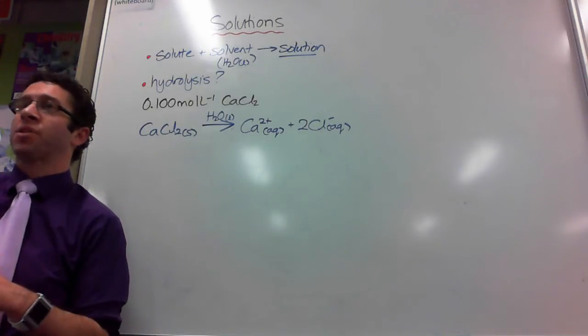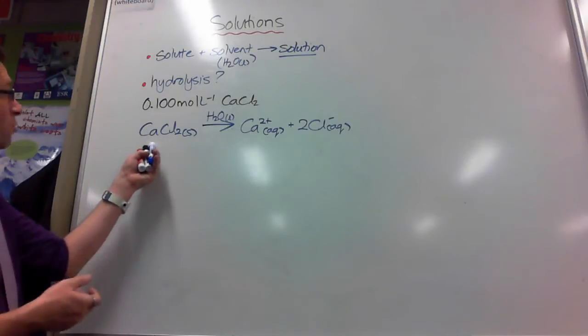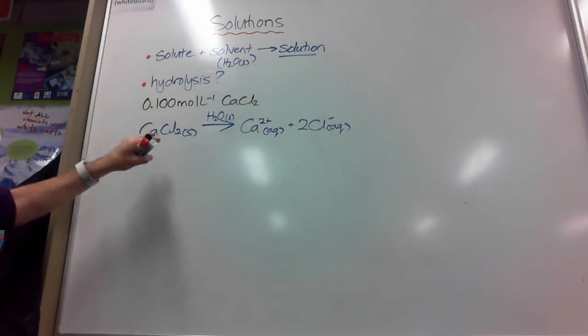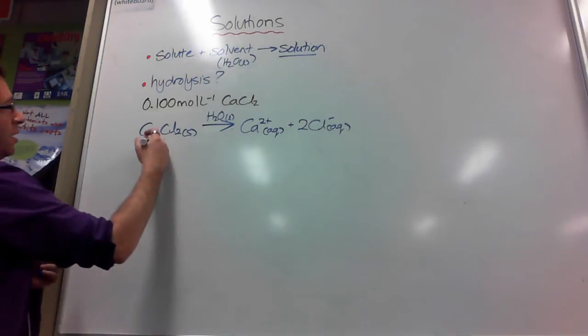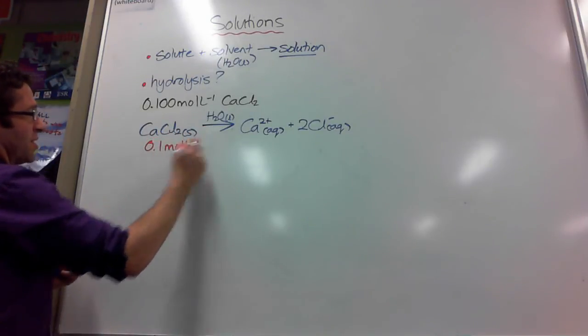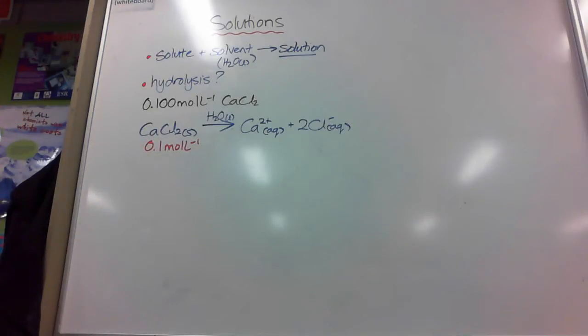I have got as much dissolved in there as possible. For that we have Ks or solubility product. Because it's below its solubility, I'm sorry I'm going to get rid of my significant figures here. 0.1 moles per litre of those dissolve.